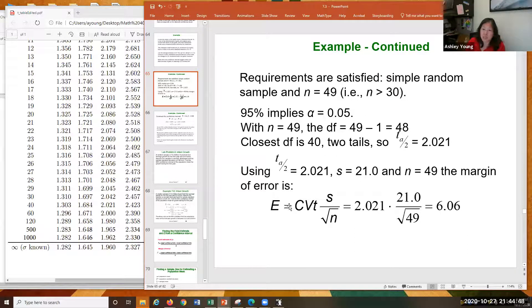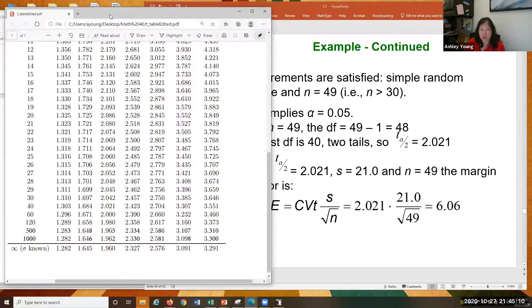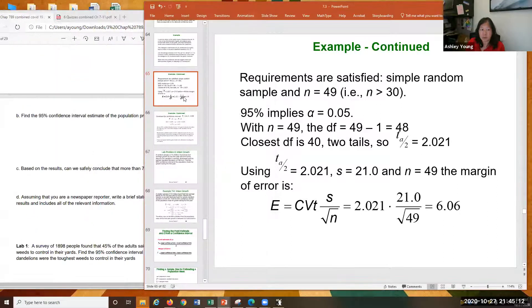Pop everything in. So my error is going to be my critical value for a T, 2.021 times S over square root of N. S is 21.0. Square root of N is square root of 49. And if you do that, you'll get 6.06. So you should be writing that in, write it down, take notes of it, take a picture of it if you need to. We're going to move on.